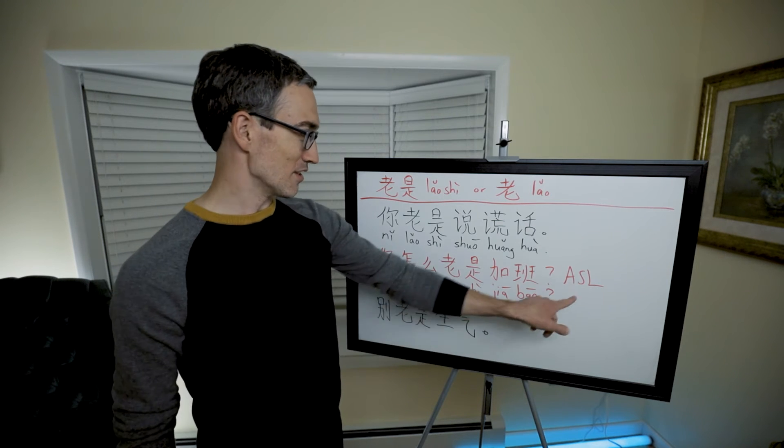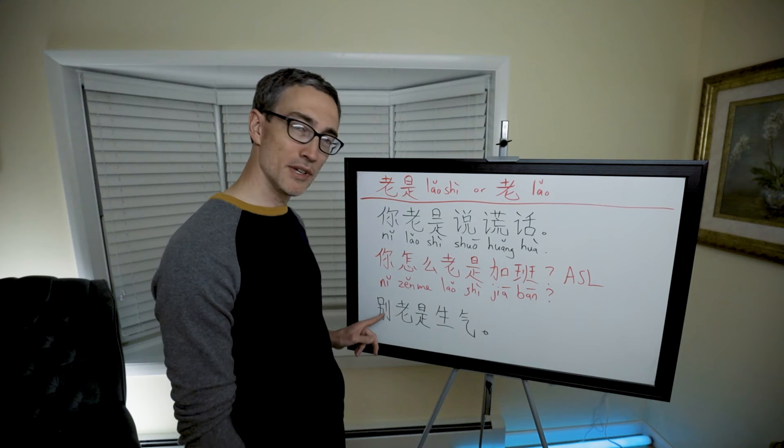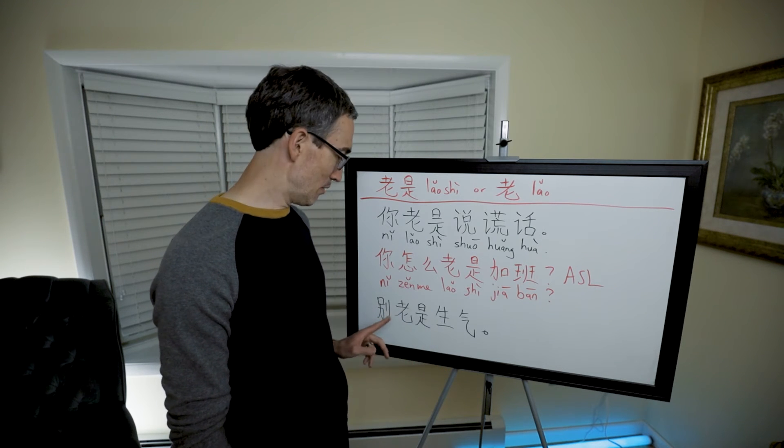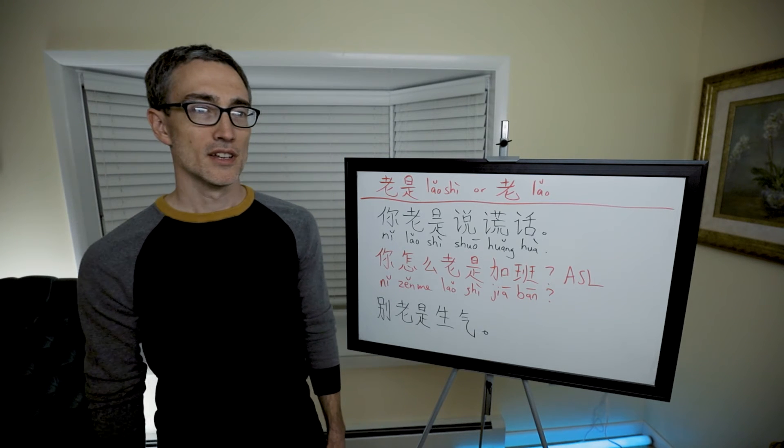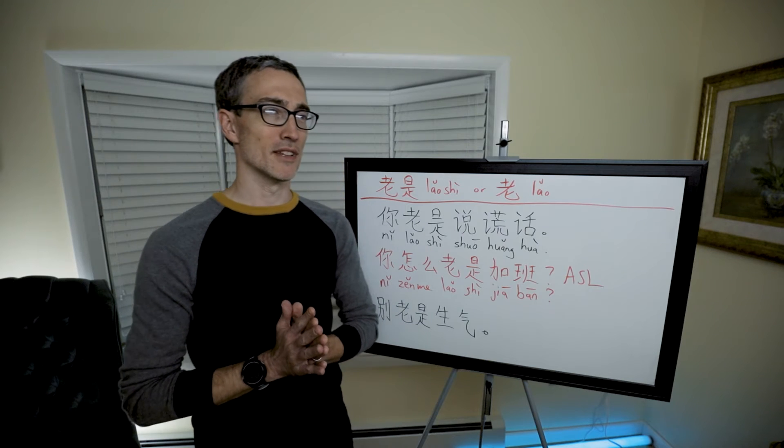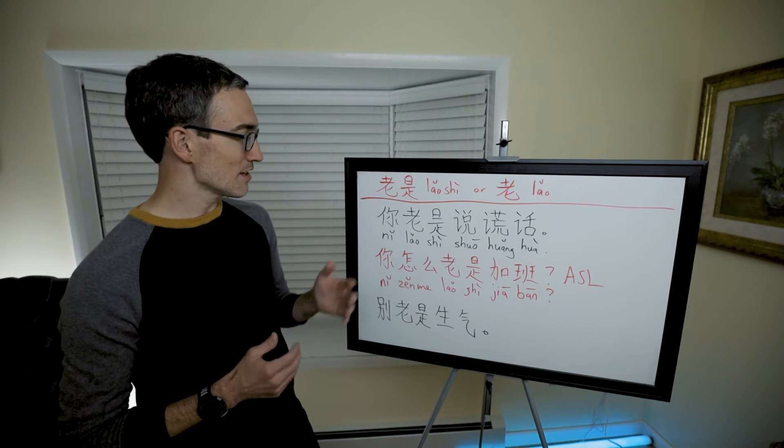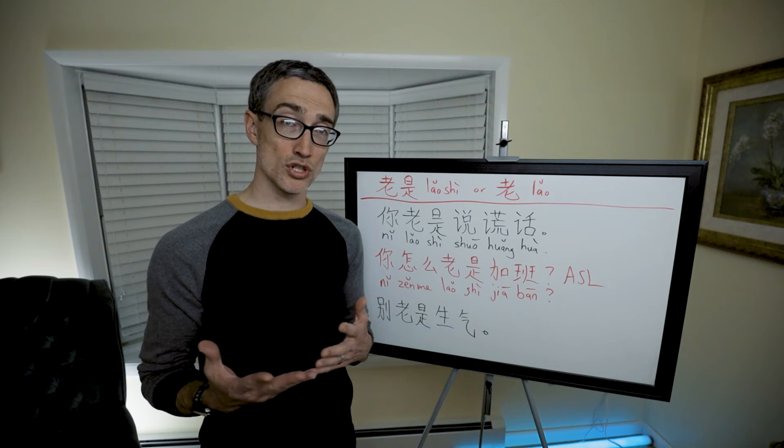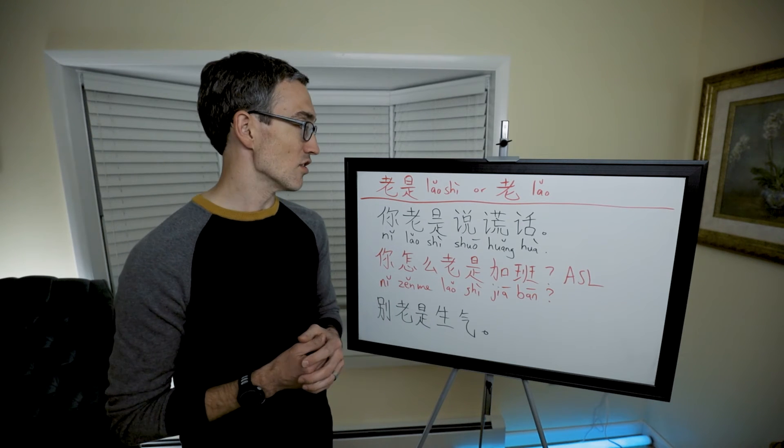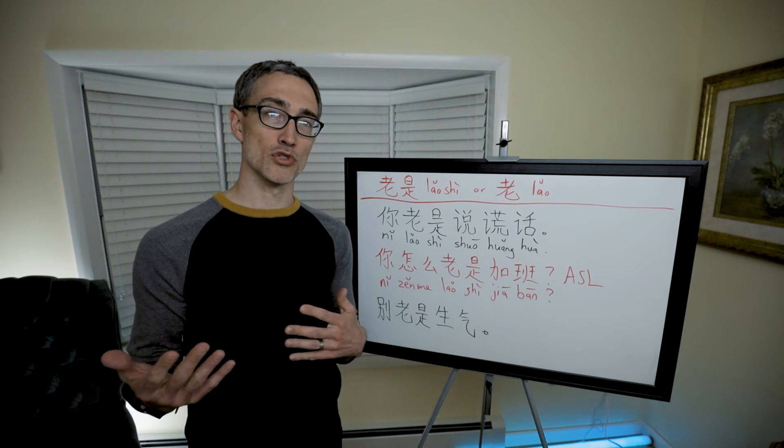别老是生气. That's from Allset Learning, by the way. Do not, 别, do not always be angry. 别老是生气. Don't always be angry, or stop always being angry, something like that. Okay, so there's 老是. It means exactly the same as 总是, but it's basically always negative, and so where 总是 can be positive, neutral, or negative.